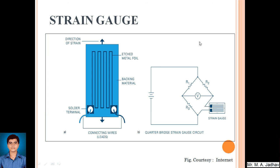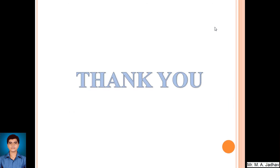If all the resistances are replaced, it is called a full bridge strain gauge circuit, where all the resistances are replaced by strain gauges. This is how a strain gauge works, and we can use that in a strain gauge based accelerometer. Basically, the accelerometer measures acceleration provided by the system when the sensor is connected to the system, measuring the output voltage produced. Thank you.